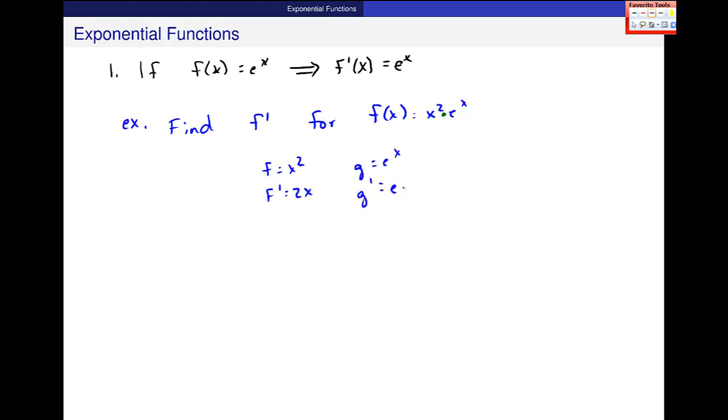And g is e to the x, and g prime is e to the x. So f times g prime plus g times f prime, and we get x squared e to the x plus e to the x times 2x. And really, you can factor this e to the x out, and maybe an x even, x squared plus 2x.